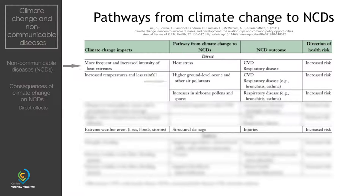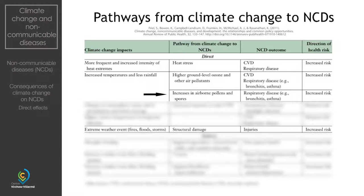An increase in temperatures coupled with reduced rainfall can increase the levels of air pollutants. For example, high level UV light promotes the formation of ground level ozone which has been linked to cardiovascular and respiratory diseases and deaths. Similarly, high levels of airborne pollen and the early arrival of spring have increased the risk of respiratory and allergic diseases.